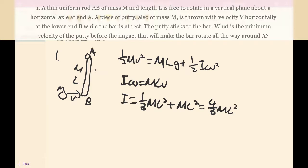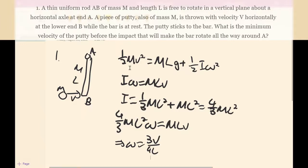Okay, so then this means that we can plug this into the second equation and this gives us 4/3 ML squared omega equals MLv. We can plug this back into the first equation and we get that 1/2 MV squared is equal to MLg plus 1/2 of 4/3 ML squared times this V squared which is 9/16 times V squared over L squared.